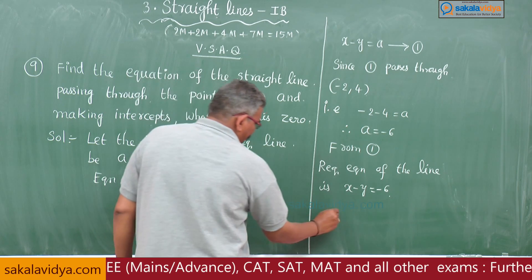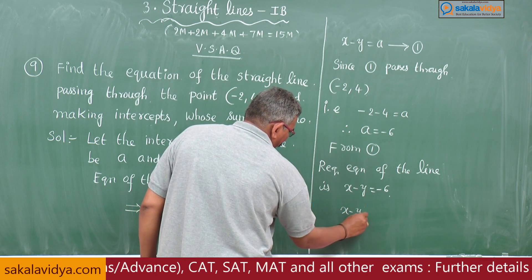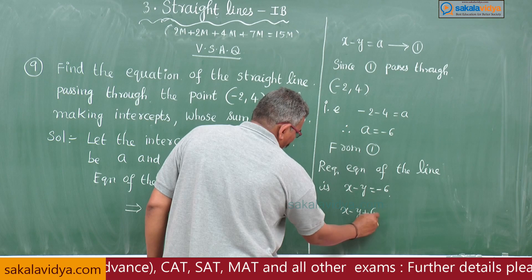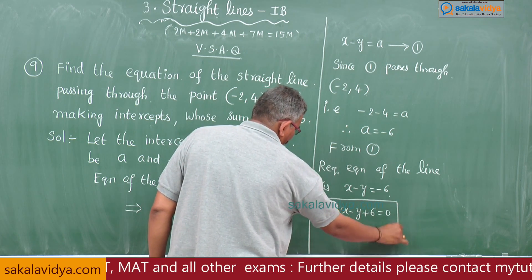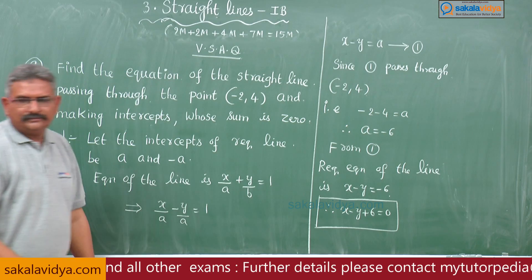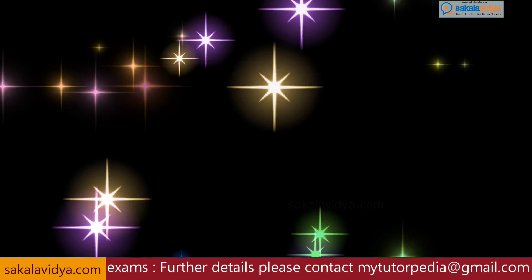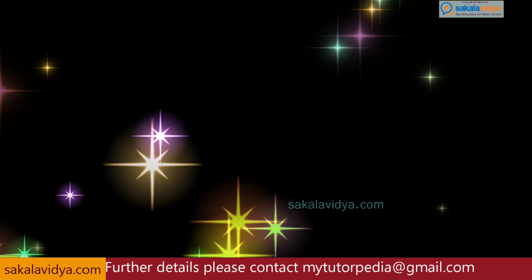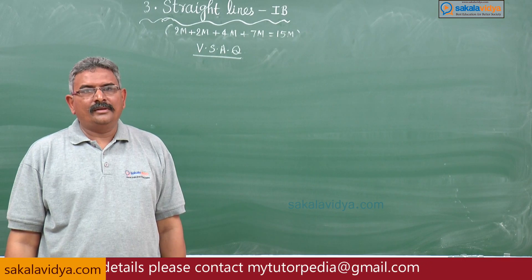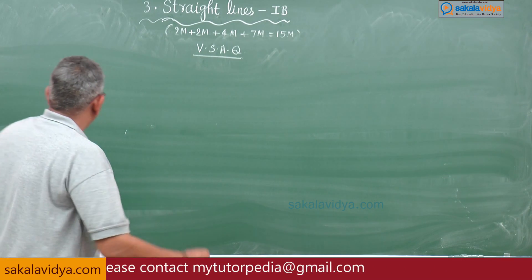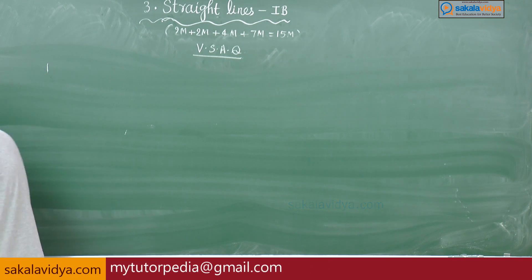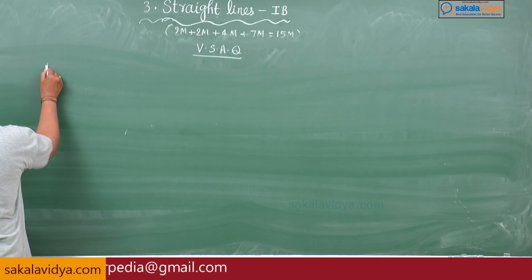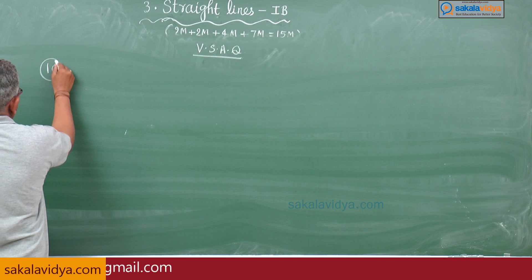Therefore, x minus y plus 6 is equal to 0. This is the required equation of the line.